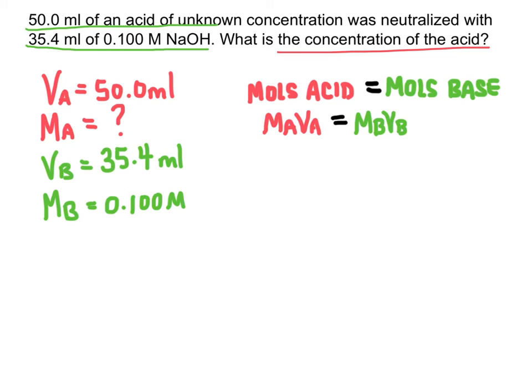To look like this, concentration of acid times volume of acid is going to be the same thing as the number of moles of acid. And that's going to be equal to the concentration of base times the volume of base.